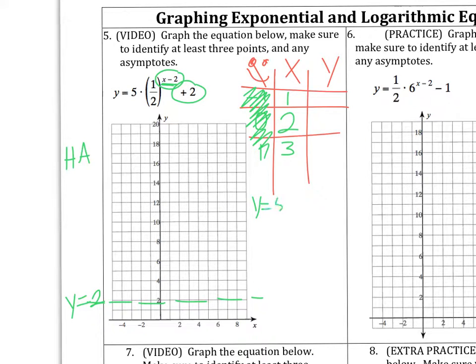At that point, I can plug in these three points. Remember that after I've got these x values, those happy numbers can be ignored for the rest of the problem. So then we've got y is equal to 5 times 1 half. 1 minus 2 is negative 1. Plus 2. 1 half to the negative 1 is 2. 5 times 2 is 10. Plus 2 is 12. So that point would be at 12. Let's look at 2.